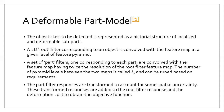As an example, the root filter could capture coarse-resolution edges such as a face boundary, while the part filters could capture finer details such as eyes, nose, and mouth.